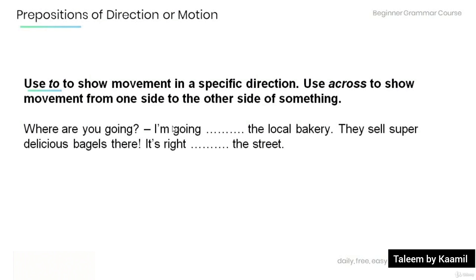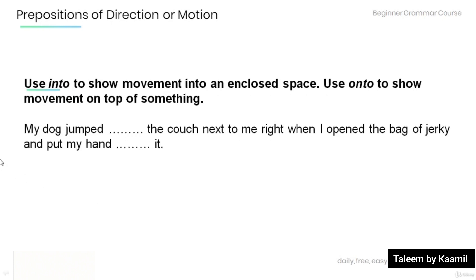Now let's review and practice. Remember that we use 'to' to show movement in a specific direction, and 'across' to show movement from one side to the other side of something. Fill in the blanks with 'to' or 'across': 'Where are you going?' — 'I'm going to the local bakery. They sell super delicious bagels there. It's right across the street.'